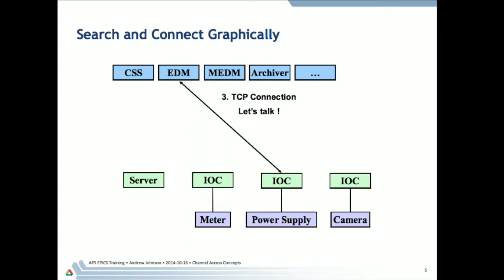If the client wants to connect to more than one process variable, it sends out all the PV names in multiple broadcasts, trying to collect as many as possible into a single UDP packet. It may get back responses from several different servers, so it needs to make TCP connections to each server it wants to talk to. But between one client and one server there only needs to be one TCP connection — multiple channels can talk over the same TCP connection.